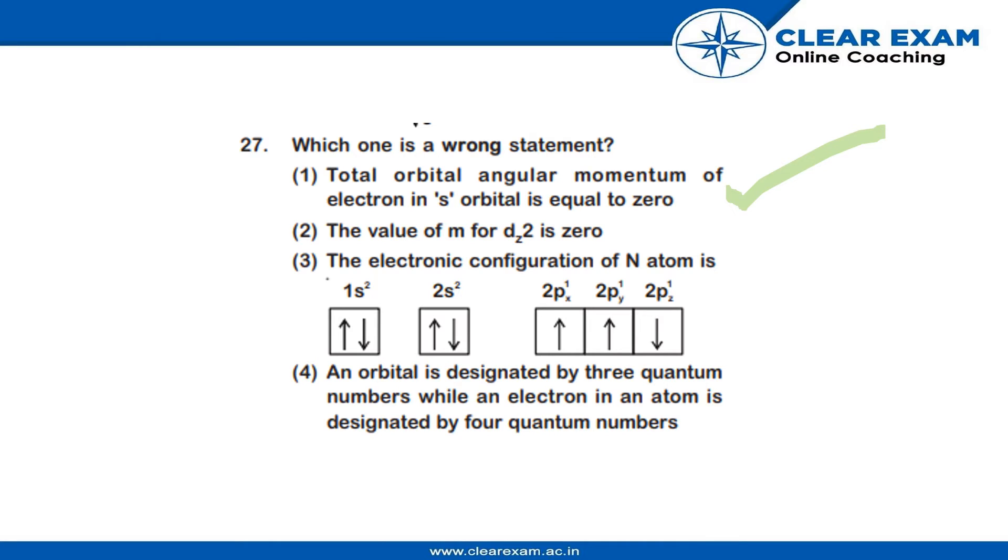This statement is also correct. Third, the electronic configuration of nitrogen atom is 1s² 2s² 2px¹ 2py¹ 2pz¹. The electronic configuration which is mentioned here and highlighted in green is written correctly, but the diagram or the way that it is filled in the orbitals is wrong.